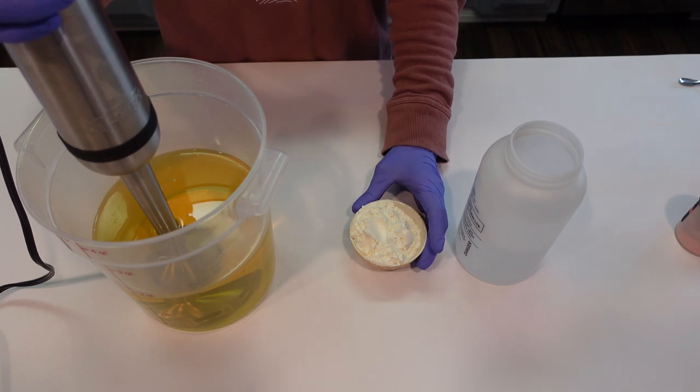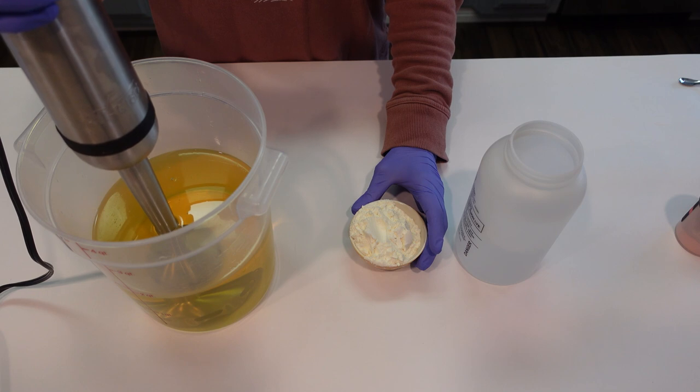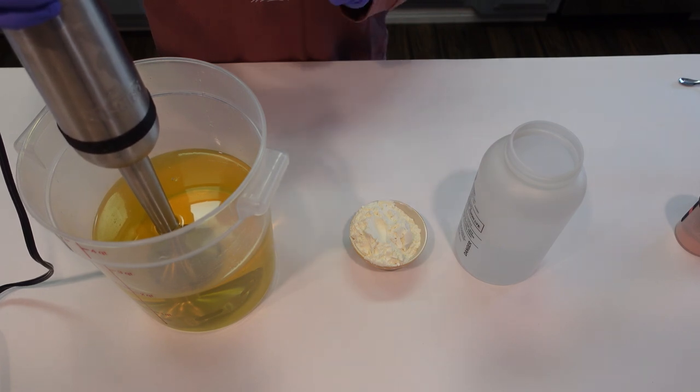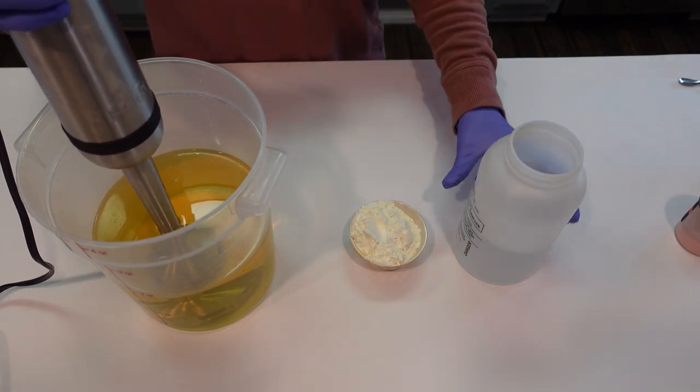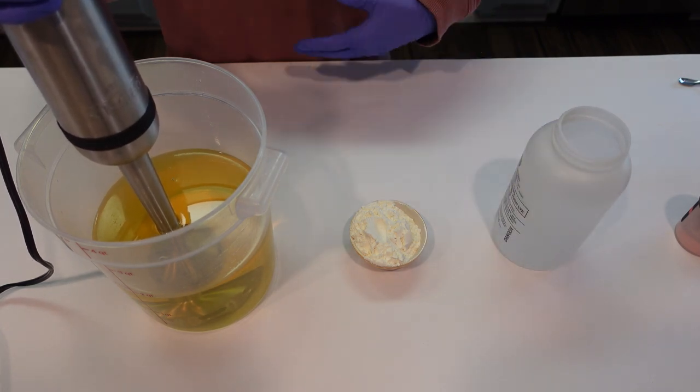So we're going to be getting a bar with lots of good cleansing lather from that coconut oil. Cocoa butter is going to give it a luxurious feeling but also help the bar to be on the harder side. Castor oil has great cleansing properties as well as contributes to a beautiful big lather. Palm oil is going to help give you a creamy bar but also help with the hardness.